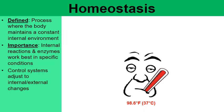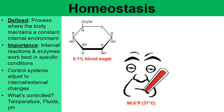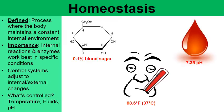We have control systems in place to maintain not just our body temperature, but also the percentage of our blood sugar and the pH of our blood. If any of these levels deviate too far from normal, we could suffer some pretty severe side effects.